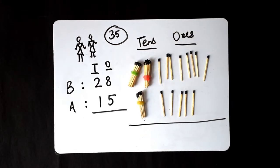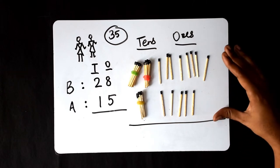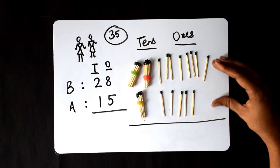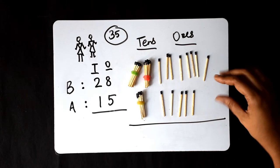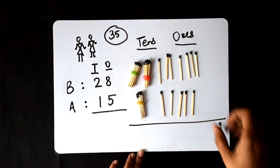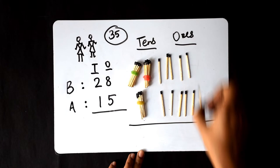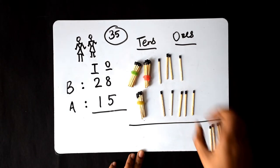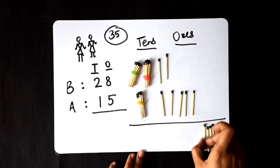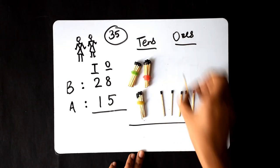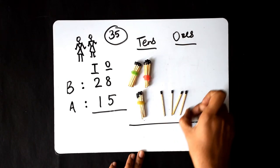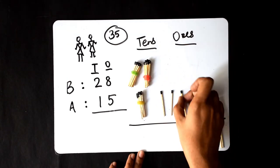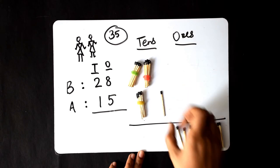Now, we have to find out how much money they both have in total. So, let's put these things together. Let's start with the ones: 1, 2, 3, 4, 5, 6, 7, 8, 9, 10, 11, 12, 13.